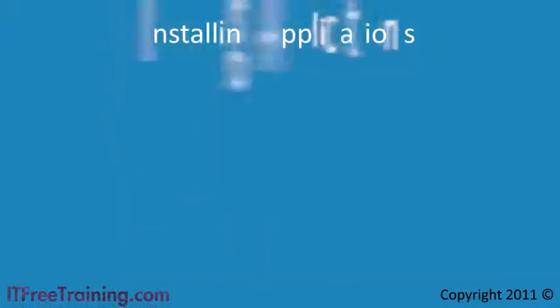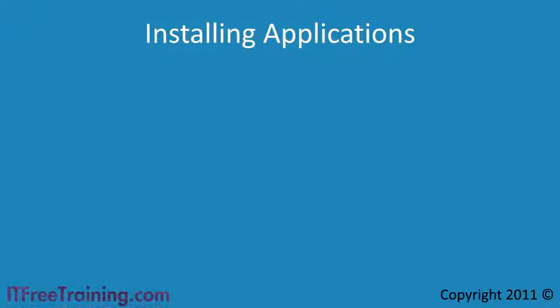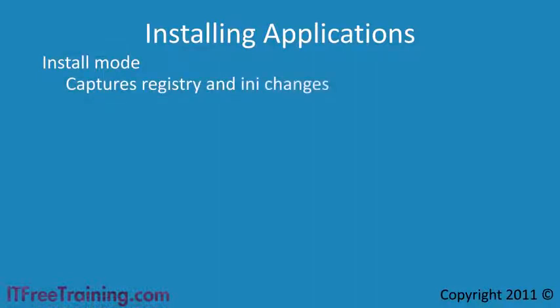Before you can use Remote App on your terminal server, you need to install some applications to provide to the end user. When you install an application on Terminal Services, you need to make sure that your terminal server is in install mode. When Terminal Services is in install mode, it will capture any registry changes made during the install. These changes are saved to a master copy.